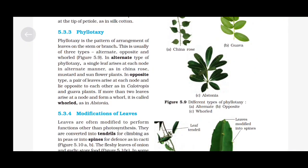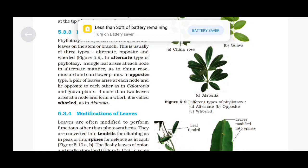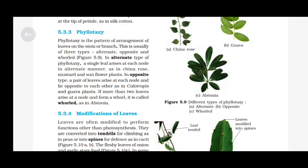Phyllotaxy: Phyllotaxy is the pattern of arrangement of leaves on the stem or branch. This is usually of three types: alternate, opposite and whorled. In alternate type of phyllotaxy, a single leaf arises at each node in alternate manner, as in china rose, mustard and sunflower plants. In opposite type, a pair of leaves arise at each node and lie opposite to each other, as in Calotropis and guava plants. If more than two leaves arise at a node and form a whorl, it is called whorled, as in Alstonia.